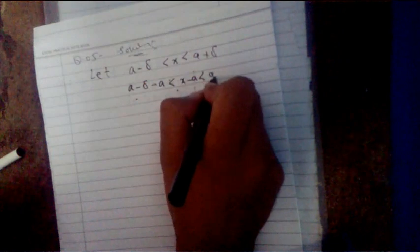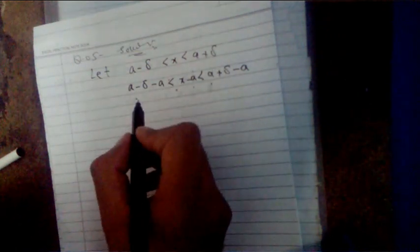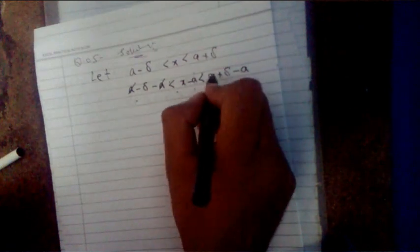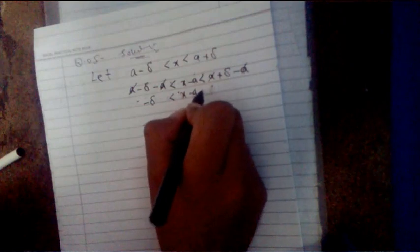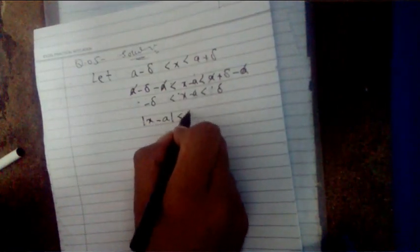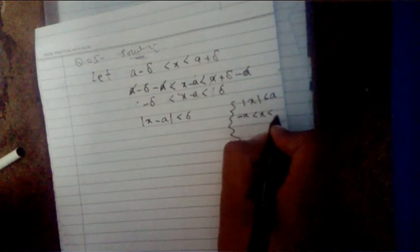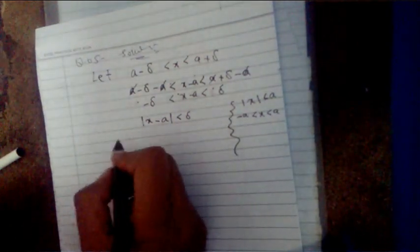Suppose a minus delta is less than x is less than a plus delta. Since we need x minus a in the absolute value, we subtract a from all sides of the inequality: a minus delta minus a is less than x minus a is less than a plus delta minus a. The a terms cancel, giving minus delta is less than x minus a is less than delta. By property four on page four, this is equivalent to |x minus a| is less than delta. This is what we needed to prove.